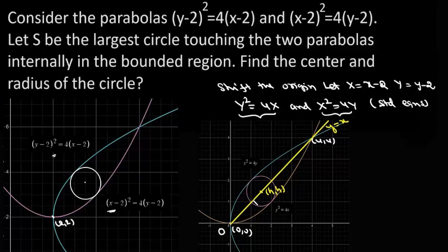Now this circle is the largest circle, so it will touch the two parabolas at the endpoints of a diameter. So these points of contact, say A and B, will be endpoints of diameter. Now suppose A is (x₁, y₁), then from symmetry B will be (y₁, x₁), the reflection of A about y = x line.